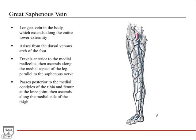The great saphenous vein is the longest vein in the entire body, analogous to the basilic vein in the upper extremity. It arises from the dorsal venous arch of the foot, similar to the venous arches in the hand, and extends along the entire lower extremity. It travels anterior to the medial malleolus and ascends along the medial aspect of the leg, parallel to the saphenous nerve.